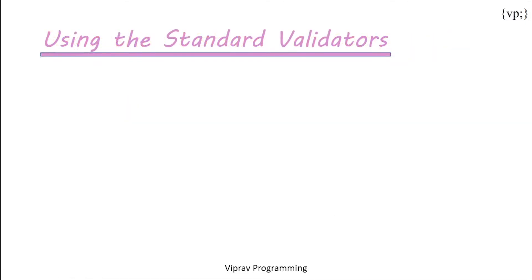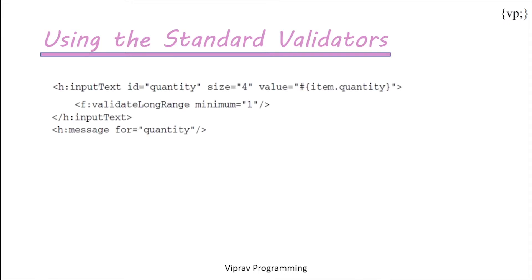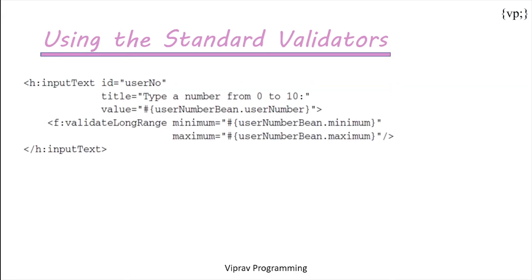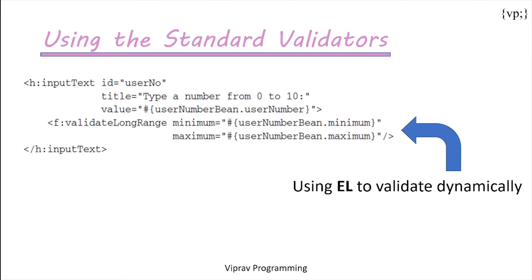Now we have standard validators. The first way to validate is using validator tags. In this case, this validator tag makes sure that the number inputted is greater than one character. You can also use EL, or expression language, that we've seen in previous chapters to create dynamic validation instead of setting literals. Just like the previous example checks for only one character, here you can change it in your Java bean, and then it will take the minimum or maximum from your Java bean and use that instead.